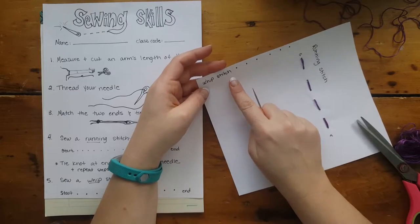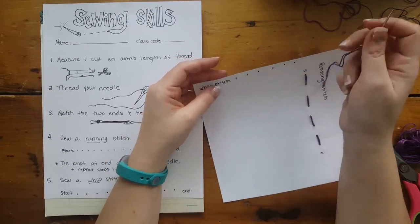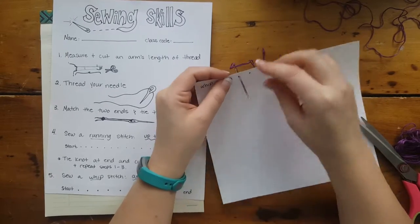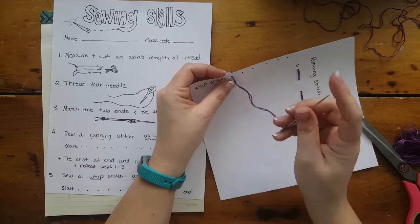Our last stitch is the whip stitch. Whip stitch means we're going to be going around. Similar to last time, I'm poking from the back. We do whip stitches along edges, so I'm going to come around.